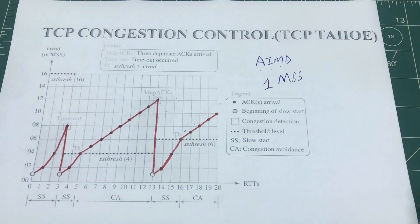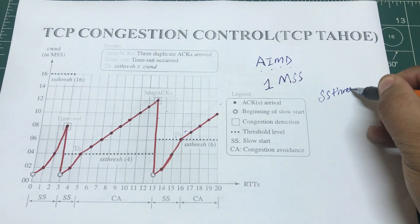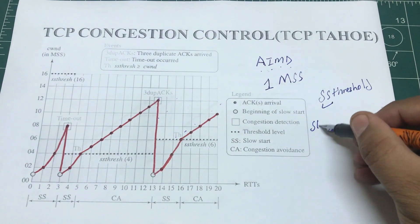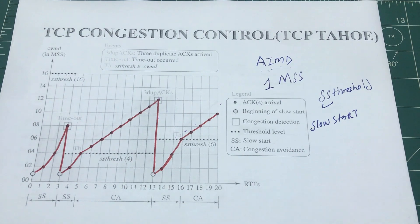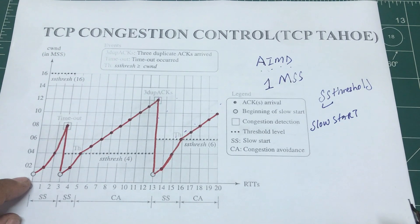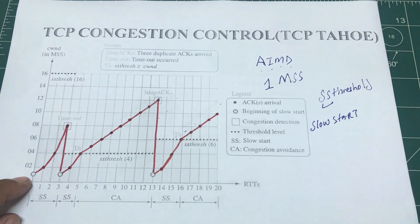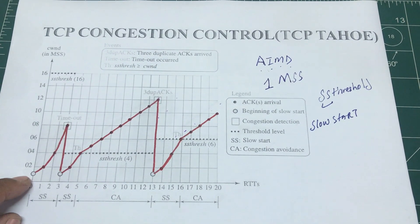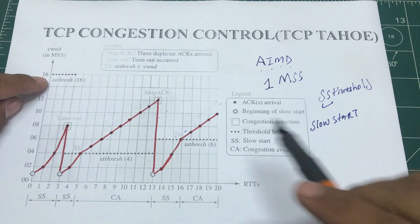There is another term we're going to use: ssthresh, which means slow start threshold. We're going to have a threshold, and based on that threshold we'll see how this algorithm works. We start off by sending a single packet — one MSS. Let's say we ambitiously set our threshold to 16.